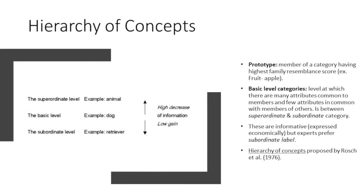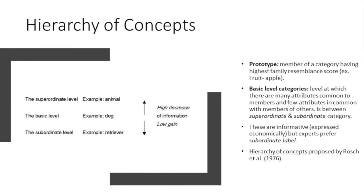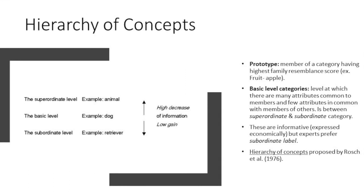These are informative since they are expressed economically but experts tend to prefer using the subordinate level. That's what makes them experts because they're able to know the difference between, for example, a different breed of dog. Hierarchy of concepts was proposed by Rosch et al in 1976.